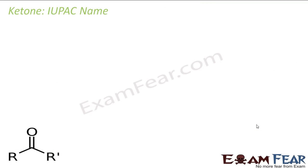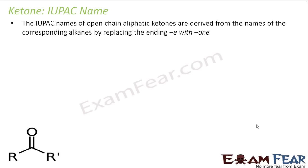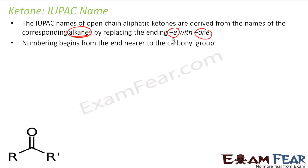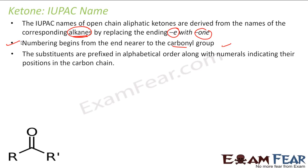Now let's learn the IUPAC name of ketones. As I mentioned, the IUPAC name is derived from alkanes — whether it's carboxylic acid, aldehyde, ketone, or alcohol, all are derived from alkanes. For ketones, the terminal '-e' of alkane is replaced with '-one', and the numbering begins from the end nearer to the carbonyl group, same as for aldehydes. If there are substituents, use alphabetical order.